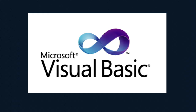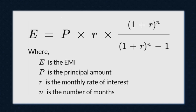We will write this code in Visual Basic. Here is the formula for EMI: E equals P multiplied by R multiplied by (1 plus R) to the power of N, divided by (1 plus R) to the power of N minus 1. Where E is EMI, P is the principal amount, R is the rate of interest, and N is the number of months.